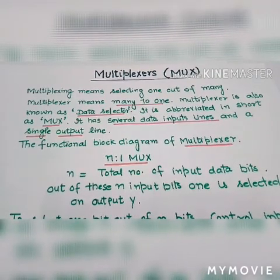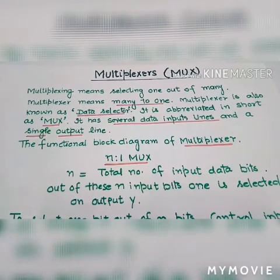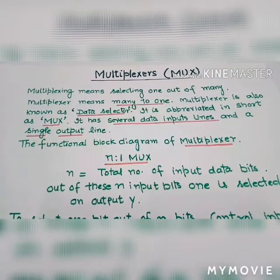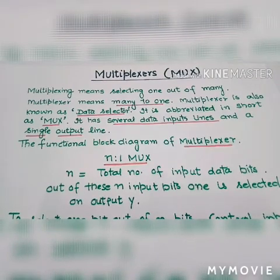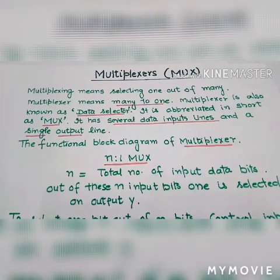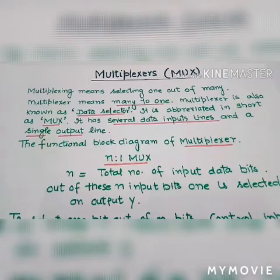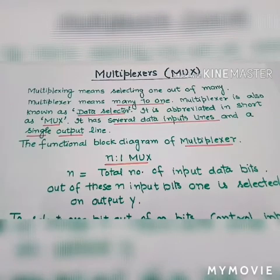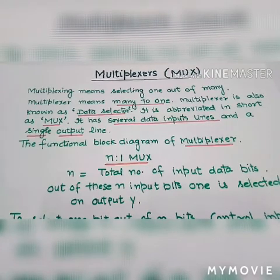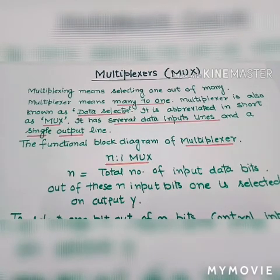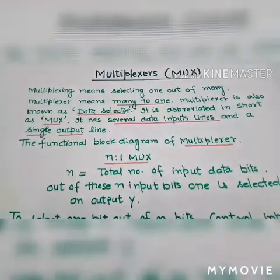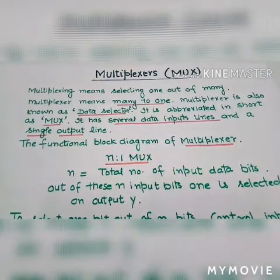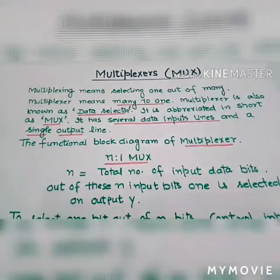Multiplexing means selecting one out of many. Multiplexer means many to one — we have several data input lines and a single output line. Multiplexer is also known as a data selector, meaning we select one input out of many. It has several data input lines and a single output line.